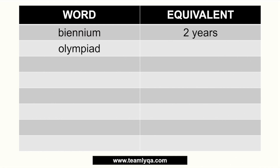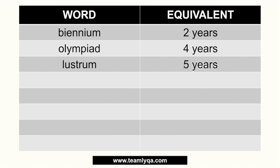Next, you have an Olympiad. The Olympiad is four years. A great way for you to remember this would be the Olympics, because the Olympics happens every four years — every four years, the entire world gathers to celebrate sports and cheer on their athletes. Next is the LUSTRUM, and its plural LUSTRA, which are five years — more than four, it's five years.